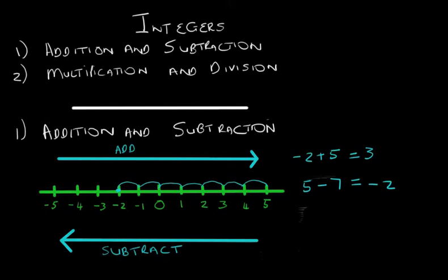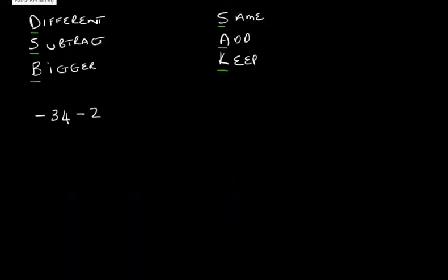However, we need to ask the question: what happens when the numbers are so big that it's a little bit difficult to draw a number line for them? When we have bigger numbers we use the DSBSAK method. When the signs are different we subtract them and keep the sign of the bigger number, and if the signs are the same we add them and we keep the sign.